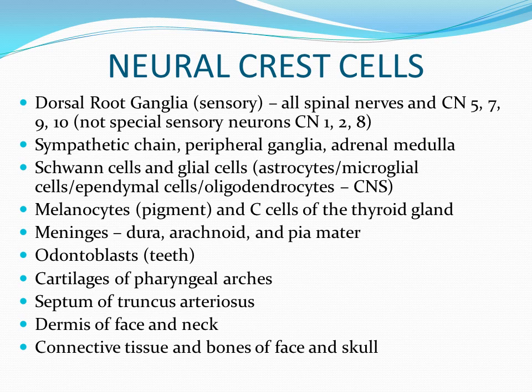Neural crest cells give us Schwann cells and the glial cells in the central nervous system. They give us the melanocytes and many different structures, all of which originally came from the dorsal ectoderm.